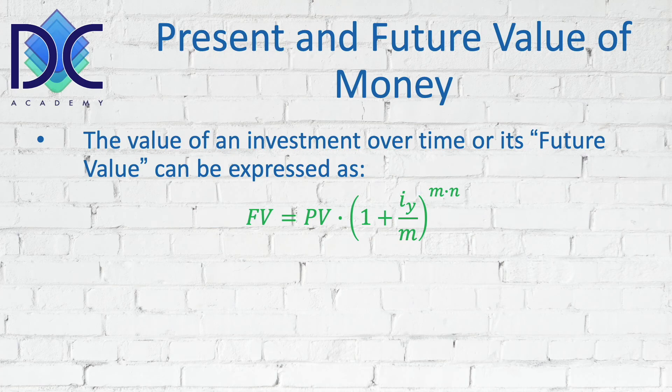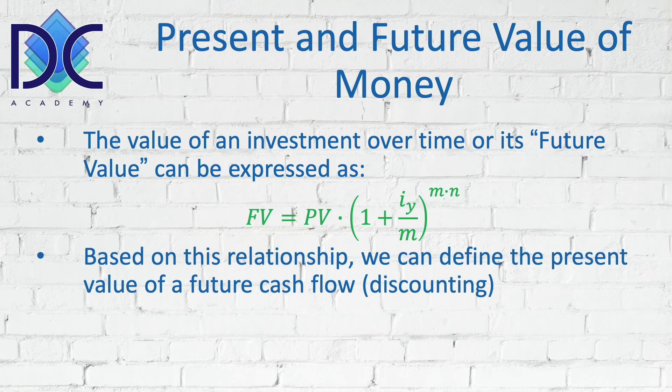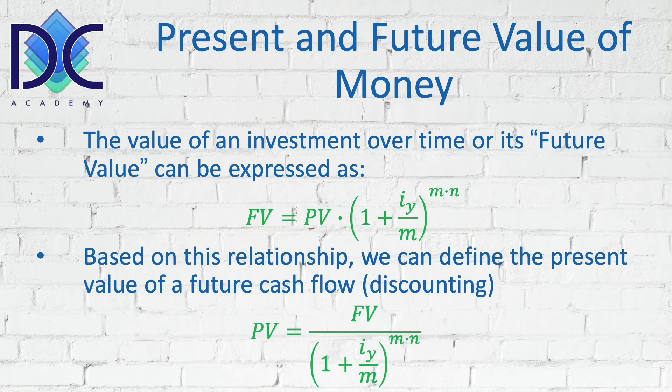Nevertheless, we still have to look into the general solution. Based on the future value formula we described, we can deduct by some mathematical manipulations the present value. When we divide both sides by the interest factor, we find that the present value is equal to the future value divided by (1 plus the periodic interest rate) to the power M times N.